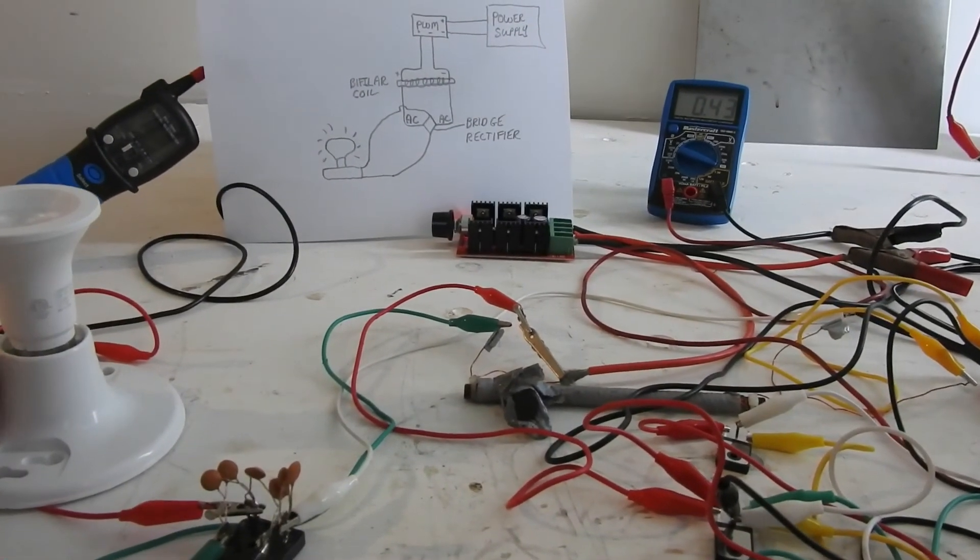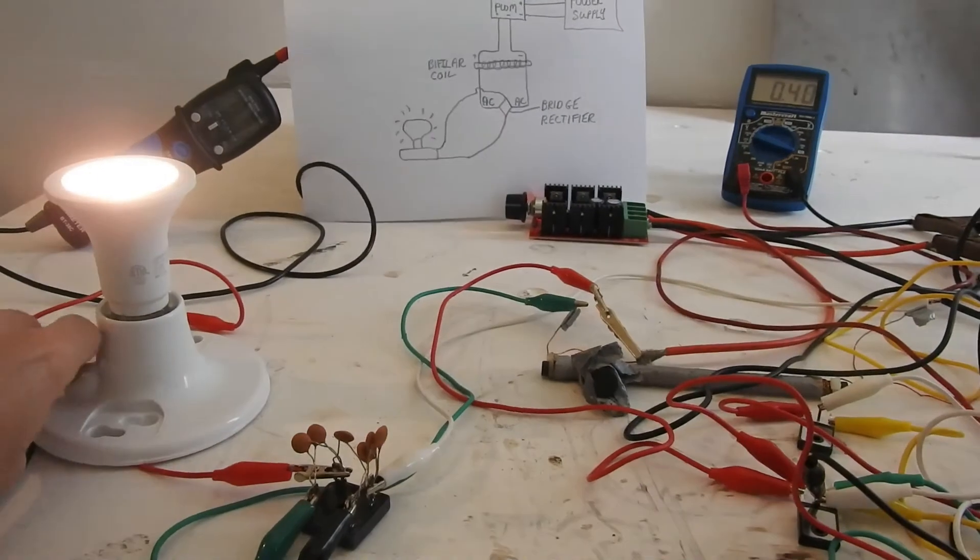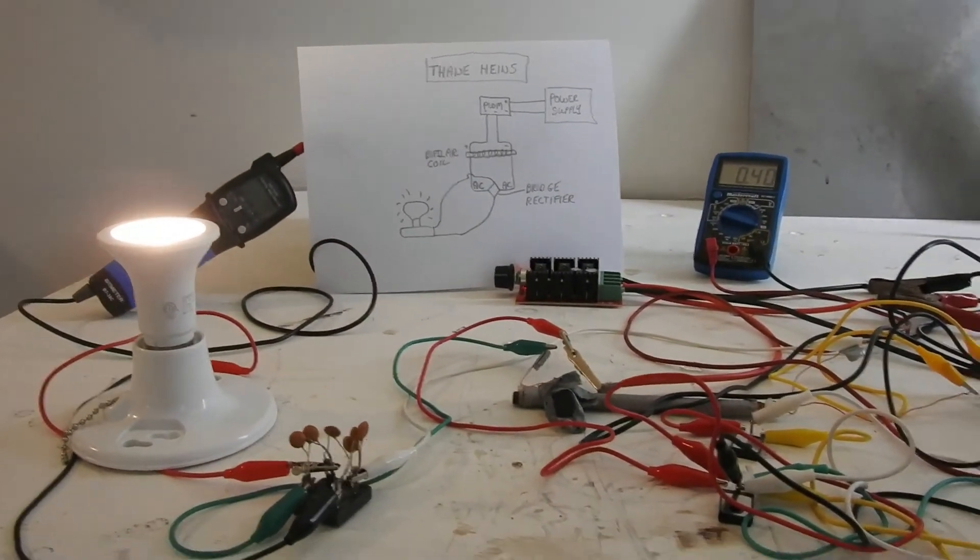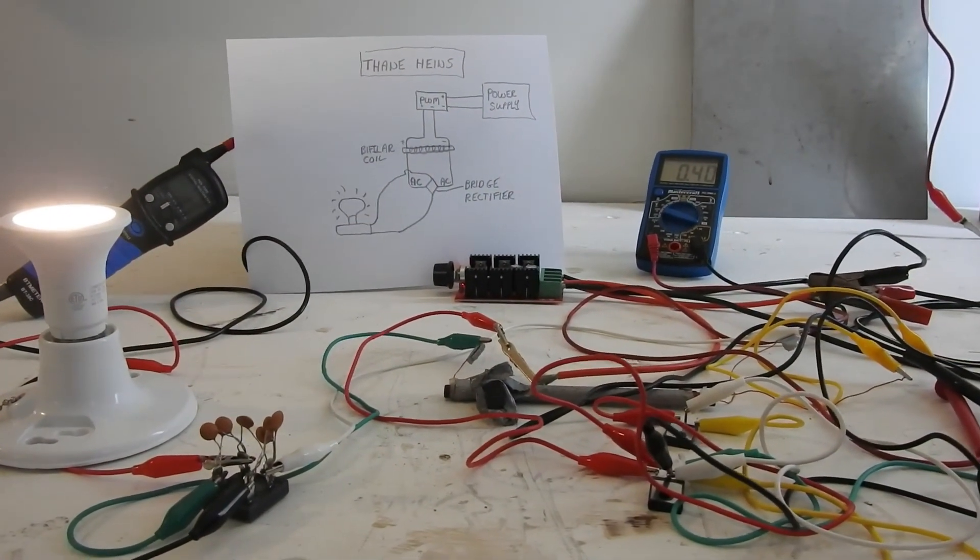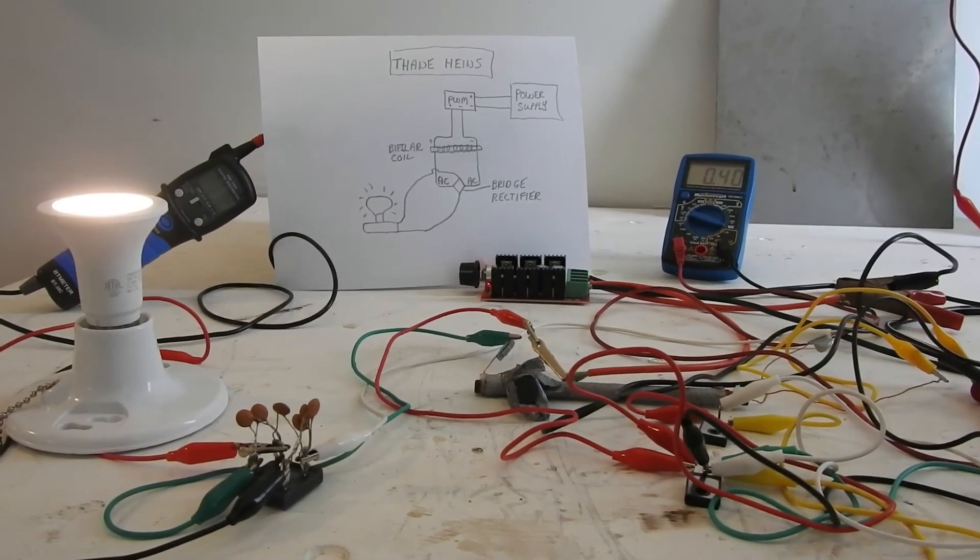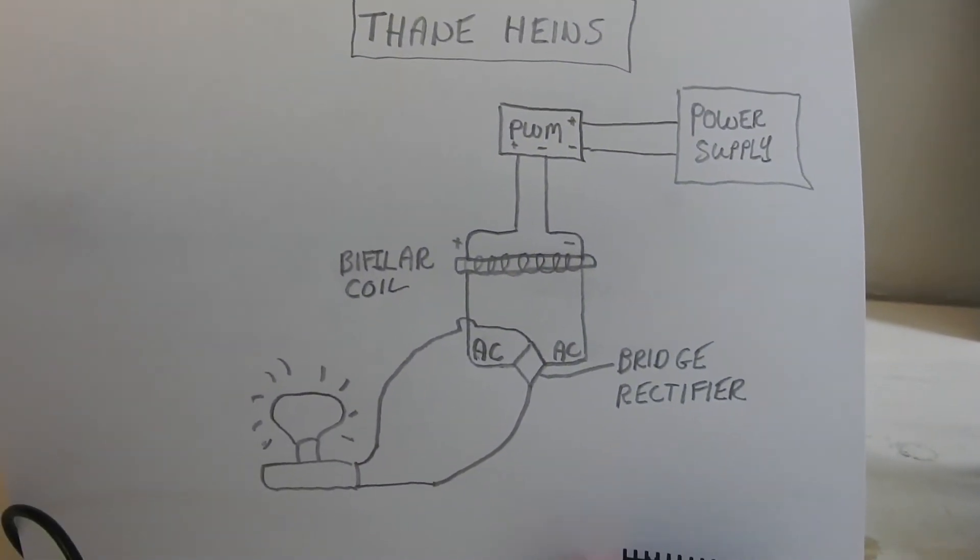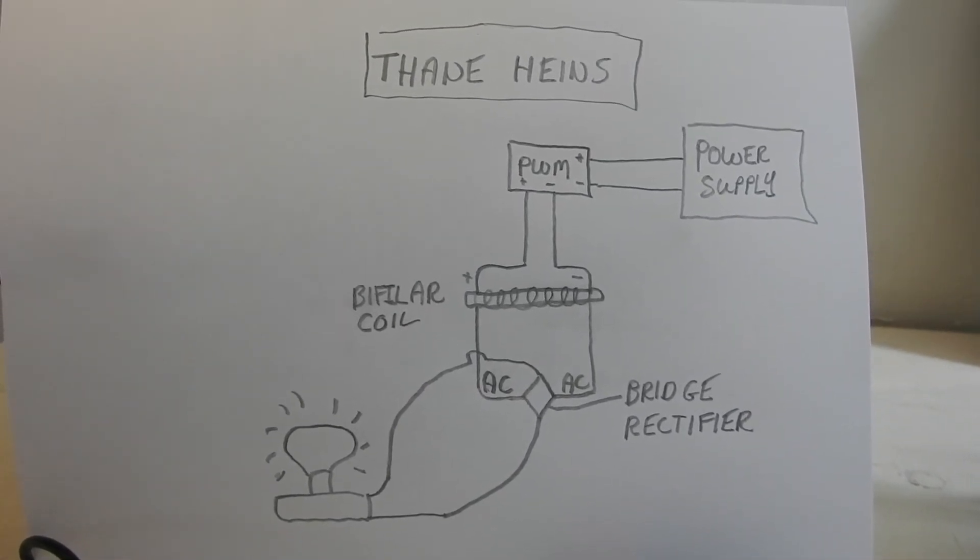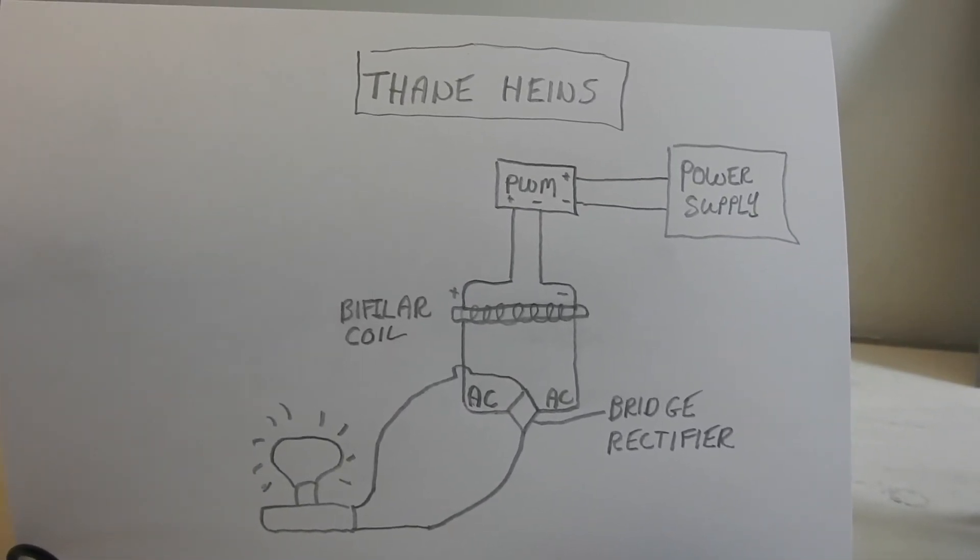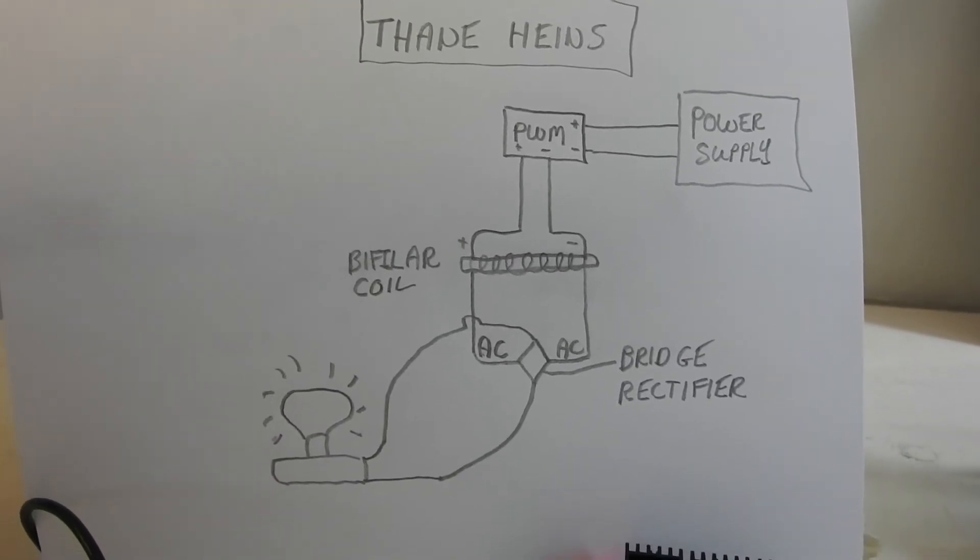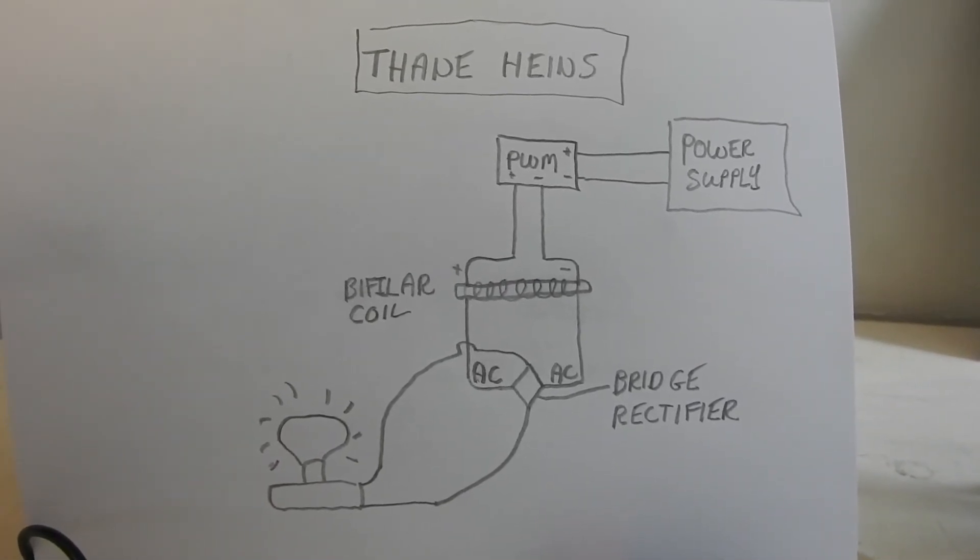So again, that's just using one bifiler rod set up basically in that configuration that's on the picture, plus or minus some capacitors, magnets, and a few MOSFETs. But that's the general setup right there.